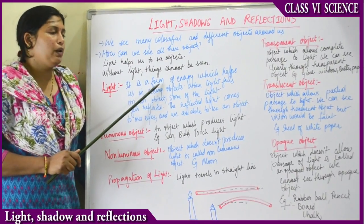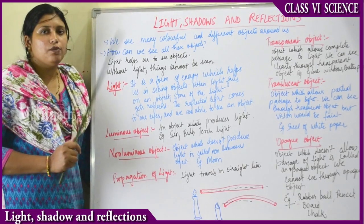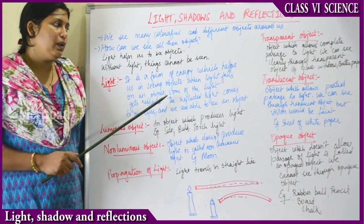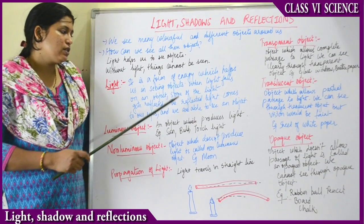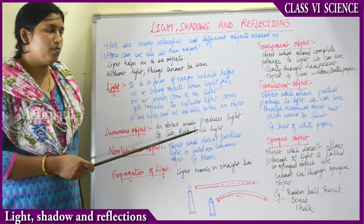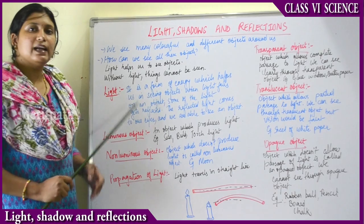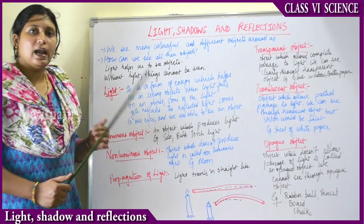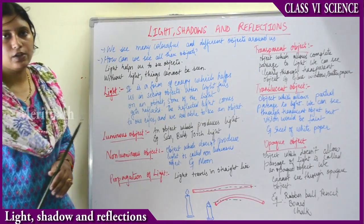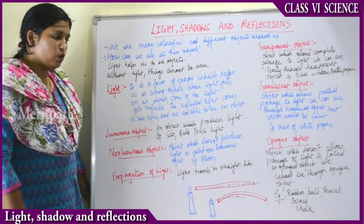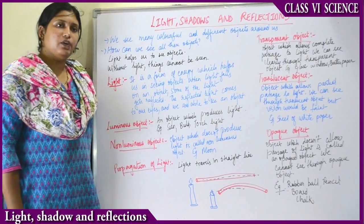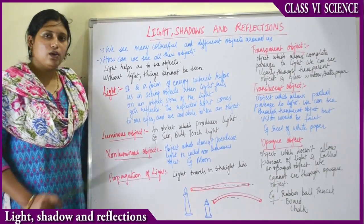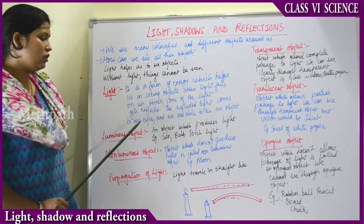For example, light comes, falls on this whiteboard, and gets reflected into my eyes so that I am able to see it. When light falls on an object, some of the light gets reflected back, the reflected light comes to our eyes, and then we are able to see the object. The light source falls on the object, gets reflected back into our eyes. That is how light, as a form of energy, enables vision.